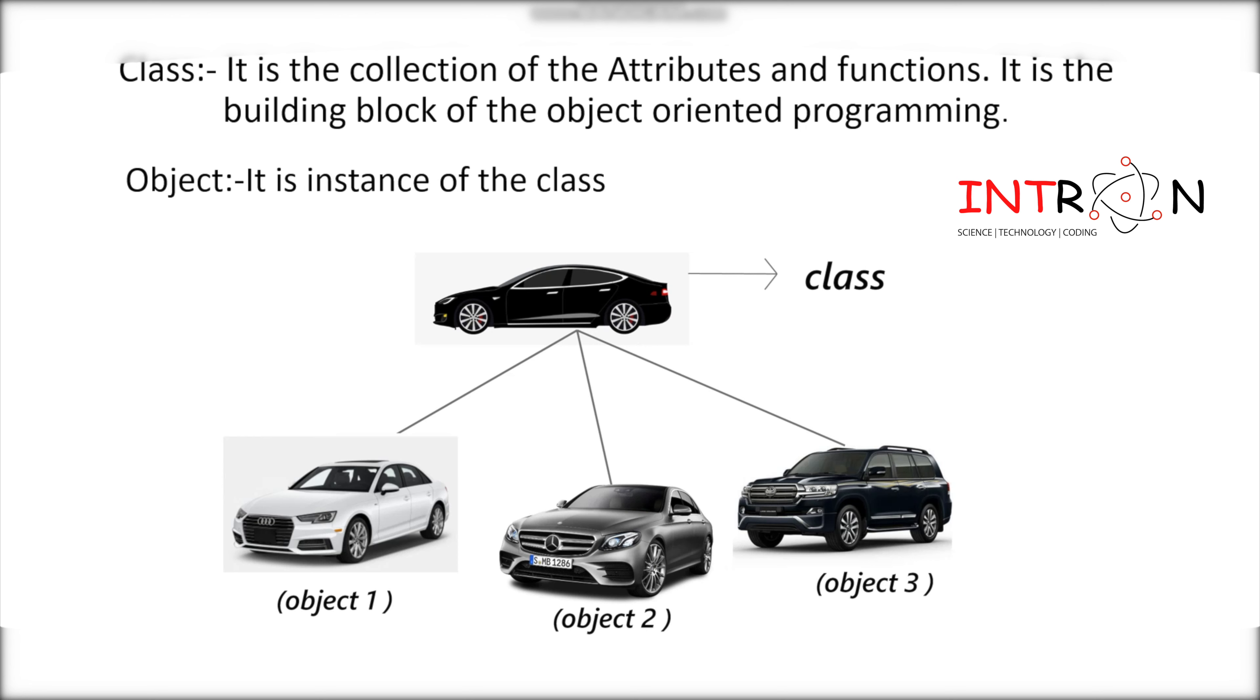You will see a simple example of what is class and object. Suppose I have one class that is car. First of all, you can see at the top there is a black car. You don't know which company or anything, you just have one car there. It is my main class. And there are different objects like Audi, Mercedes, next is Toyota. These are the different objects of that class. We can say object is nothing but the company of that car. It is being treated as an object.